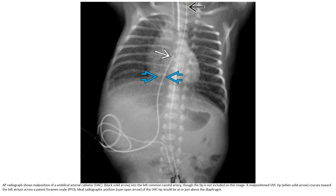AP radiograph showing malposition of a UAC into the left internal carotid artery; the tip is not included on this image. Another case shows a malpositoned UVC tip crossing toward the left atrium across the patent foramen ovale.